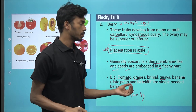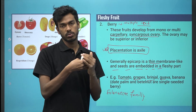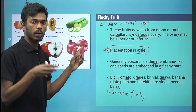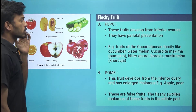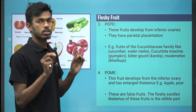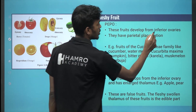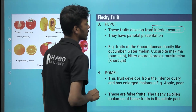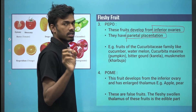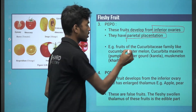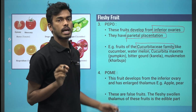If you have a seed, then you have flesh and a fruit. If you have a seed, then you have a hard endocarp. Another type is pepo. Pepo is simple to remember as the cucurbitaceae family. This is an inferior ovary with parietal placentation. It is important to remember as the cucurbitaceae family.